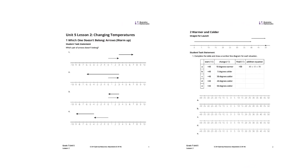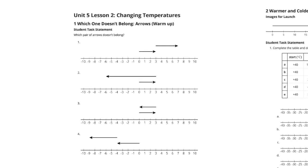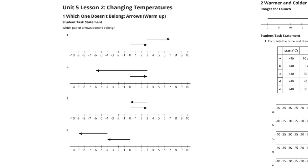In our warm-up today, our goal is to use number lines to add positive and negative numbers. As we look at our warm-up, we have a bunch of number lines with arrows, and we're going to see which ones don't belong. With these, you could come up with a reason why each one doesn't belong.